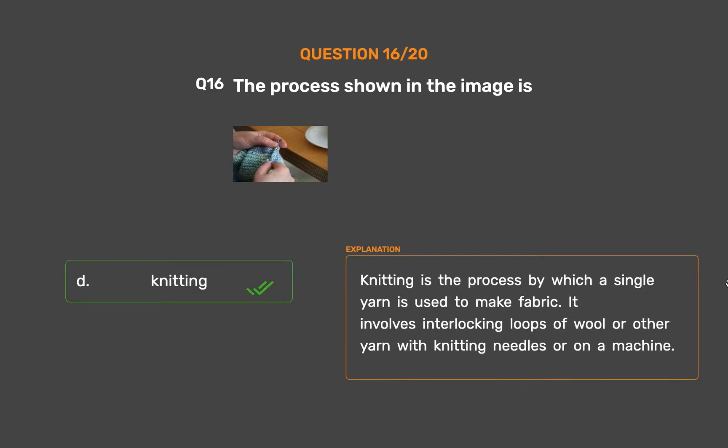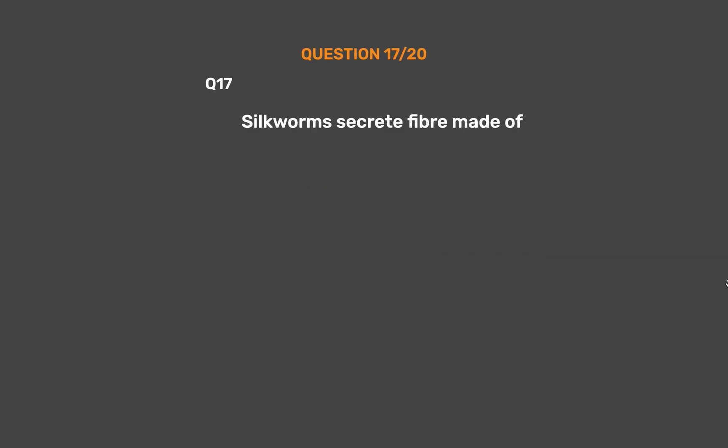Knitting is the process by which a single yarn is used to make fabric. It involves interlocking loops of wool or other yarn with knitting needles or on a machine.